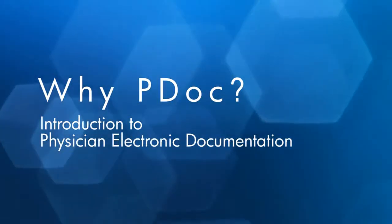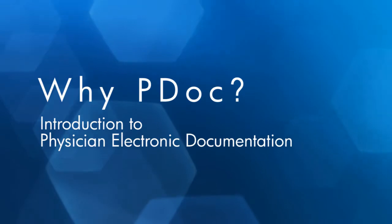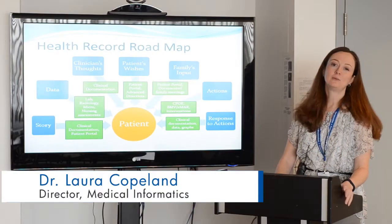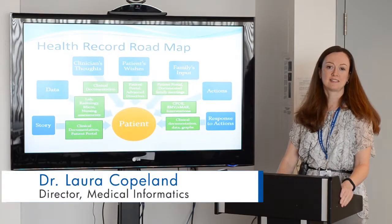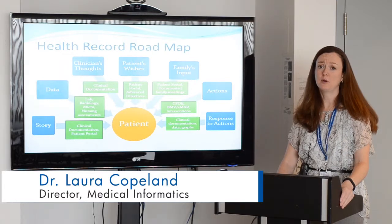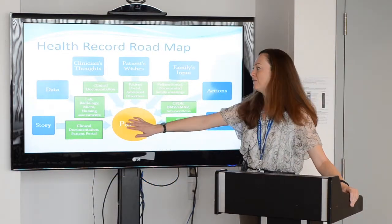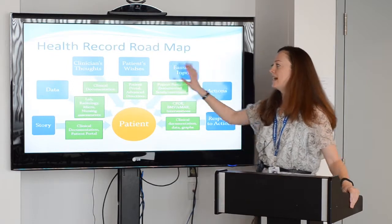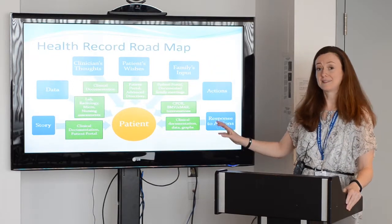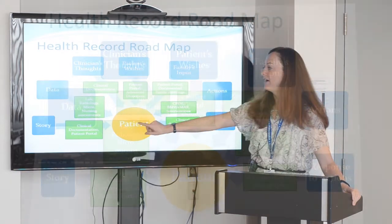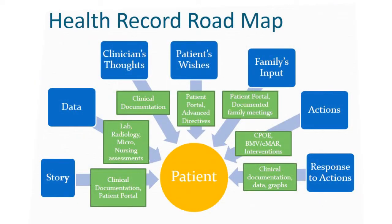Hi, today we're going to talk about electronic physician documentation. By now you should be pretty familiar with this model — this is our road map to our health record. In the center we have our patient. Around the outside we have blue tiles, which represent the things that are important to our patient, and in between we have green tiles, which tell us where we're capturing that information within our electronic health record.